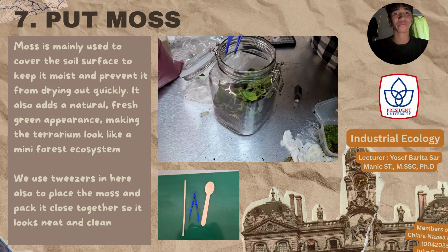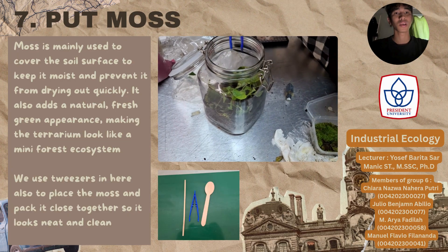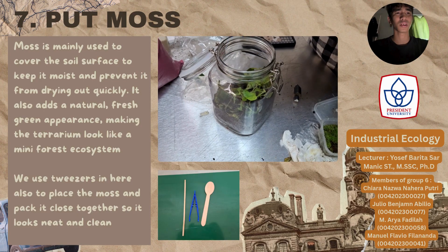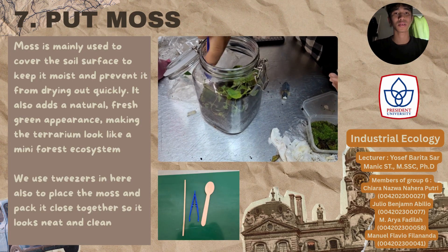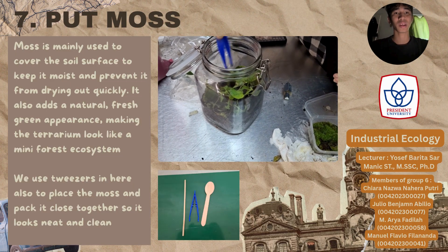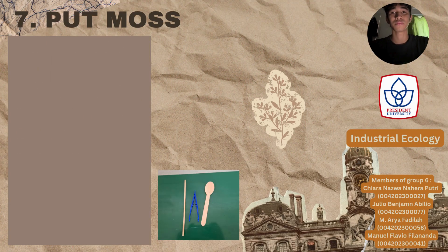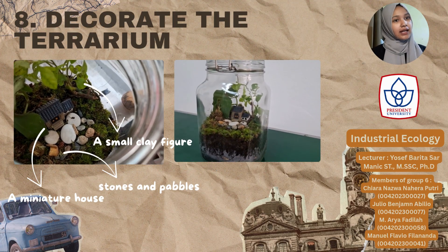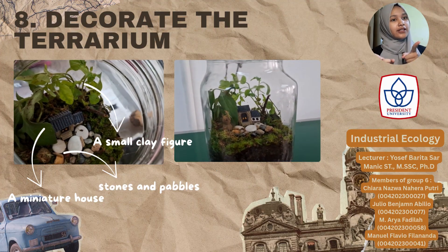Next is moss. Moss is used to cover the soil surface so it doesn't dry out too fast. The fresh green color also makes the terrarium look like a little forest. We use tweezers to place the moss and pack it close together so it looks neat and clean. The last step is to decorate however you like, and then you're done!